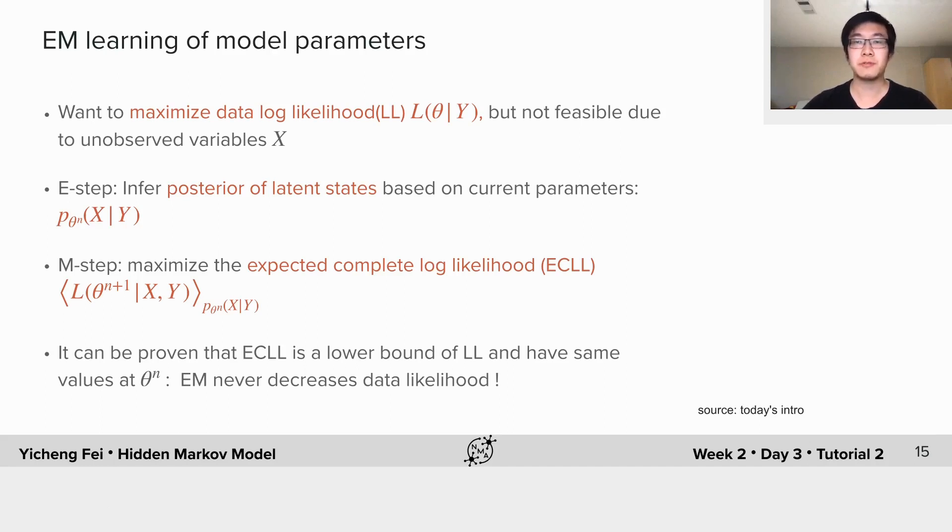Let me first briefly review the EM algorithm. Suppose we have a model with latent variables x and observable variables y, and our goal is to maximize the observed data log likelihood L(θ|Y). However, that's not feasible since we need to integrate out all the latent variable x, and the time complexity will be exponential in the dimension of x.